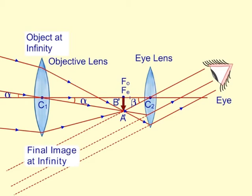Mind you, the final image is erect with respect to A-B- and is inverted with respect to the object. The final image being inverted does not actually matter, as the astronomical objects are usually spherical in shape.